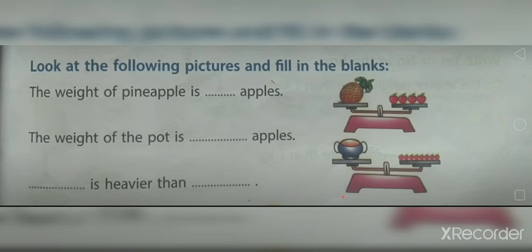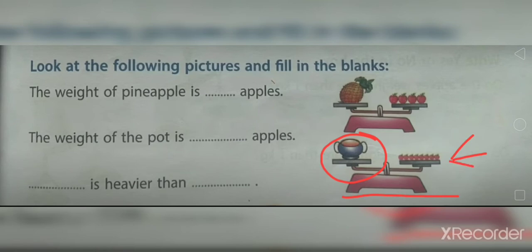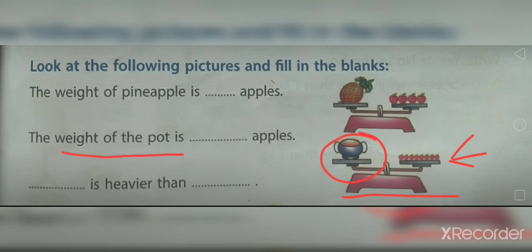In the second picture you can see a pot on one pan and apples on the other pan. We have to count the apples. Let's count together: one, two, three, four, five, six, seven, and eight. So you can write the weight of the pot is eight apples. The weight of the pot is equal to eight apples.